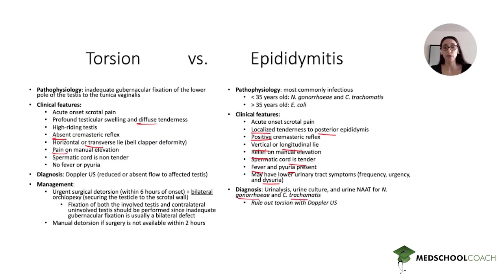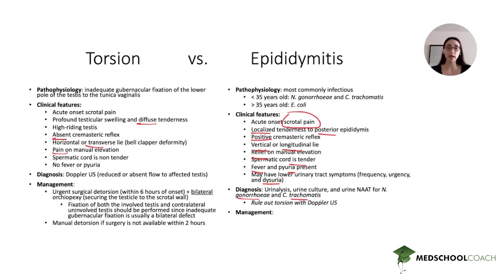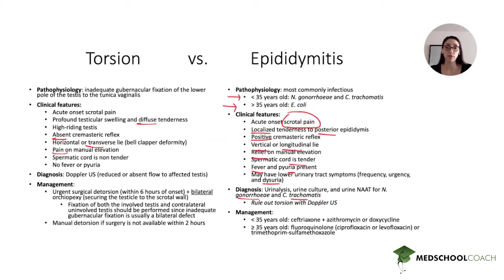For management of epididymitis, you always want to rule out torsion with a Doppler ultrasound first, since the presentations are similar. Any patient with acute onset scrotal pain should have torsion ruled out with Doppler even if you suspect epididymitis. Antibiotic therapy depends on age group: for patients under 35, treat for gonorrhea and chlamydia with ceftriaxone plus either azithromycin or doxycycline. For patients over 35, use a fluoroquinolone such as ciprofloxacin or levofloxacin, or trimethoprim-sulfamethoxazole if fluoroquinolones are not tolerated.